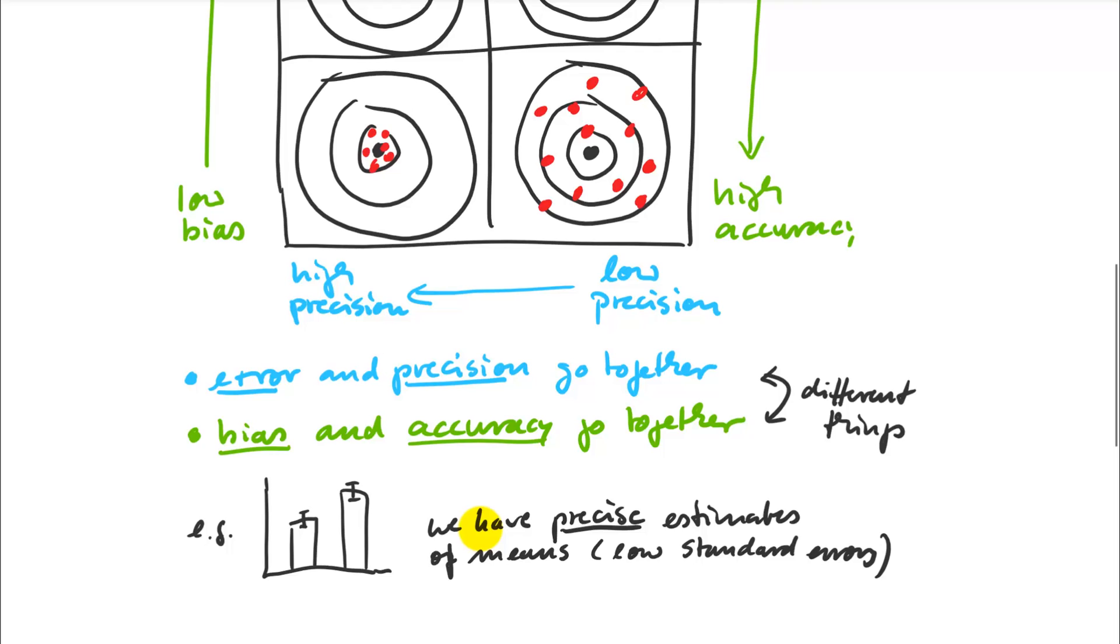And bias means that you're systematically off. So here, I'm always a little bit to the side. So they both suffer from high bias. Now, if I compare this target versus this target here, they are different in how wide they spread. So the spread is measured by the error. And that's described by the term precision. So again, error and precision go together, bias and accuracy go together. But these are different things. And to give you an example, if you do science and statistics, you shouldn't confuse those terms.